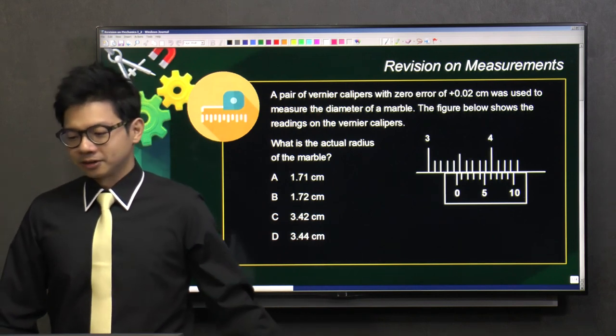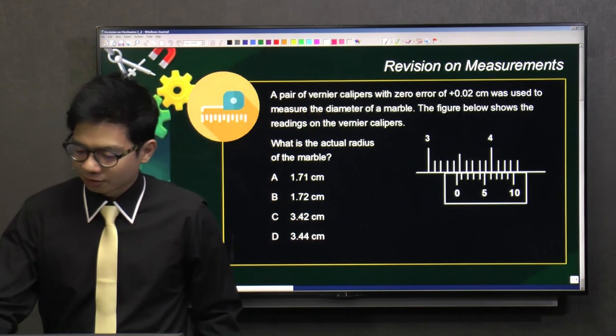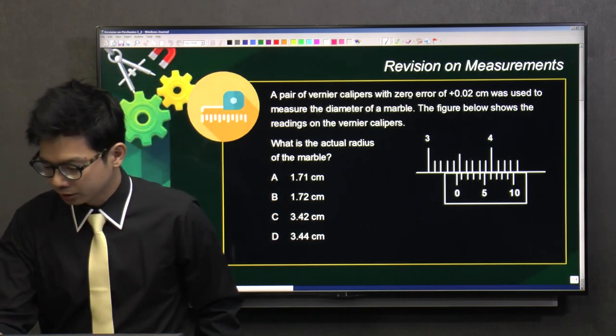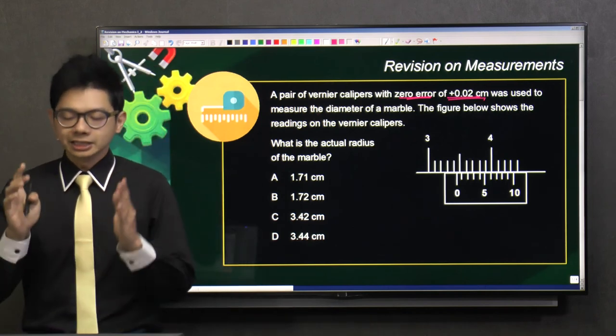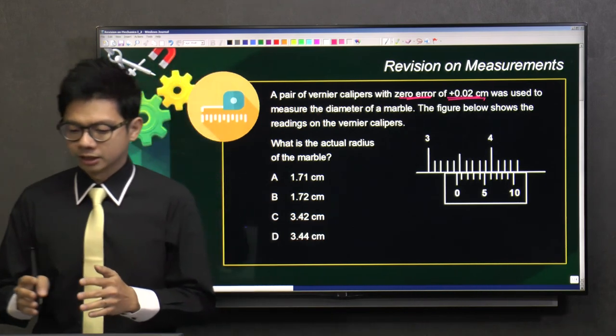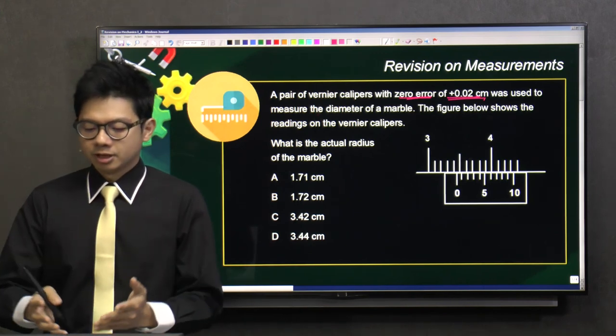A pair of vernier calipers with zero error of positive 0.02 cm was used to measure the diameter of a marble. Zero error of positive 0.02 cm, take note. And this figure shows you the readings on the vernier calipers. So, what is the actual radius of the marble?